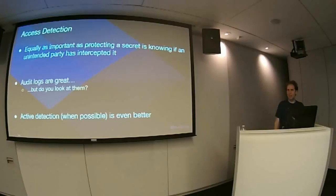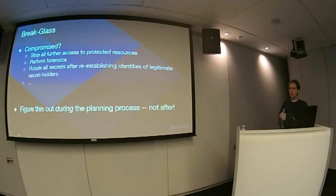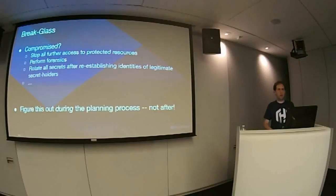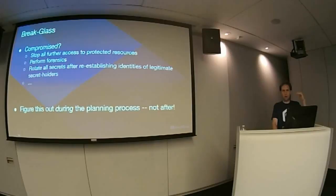Equally as important as protecting a secret is knowing that an unintended party has accessed it. Audit logs are great, but do you look at your audit logs? Most people only look at them when they know something bad has already happened — so active detection is important when possible. For break glass: when something has been compromised, you stop all further access to protected resources, cut off access to APIs, perform forensics to figure out who had access when, and rotate all secrets after reestablishing trust. This needs to be figured out during the planning stage.